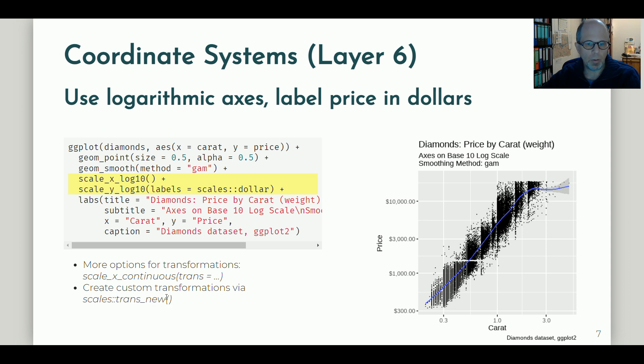We also see that for the y-axis we can use a convenience function from the scales package to label the price in dollars. This saves us some work for manual formatting. There are convenience functions also for currencies, for example, and so on.